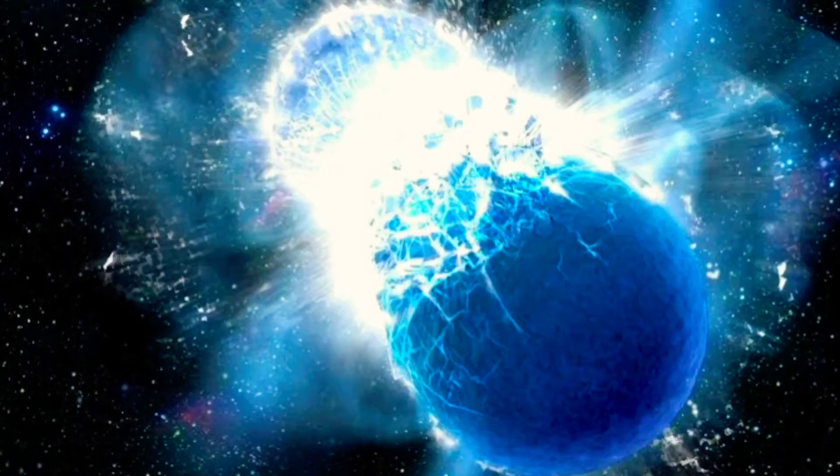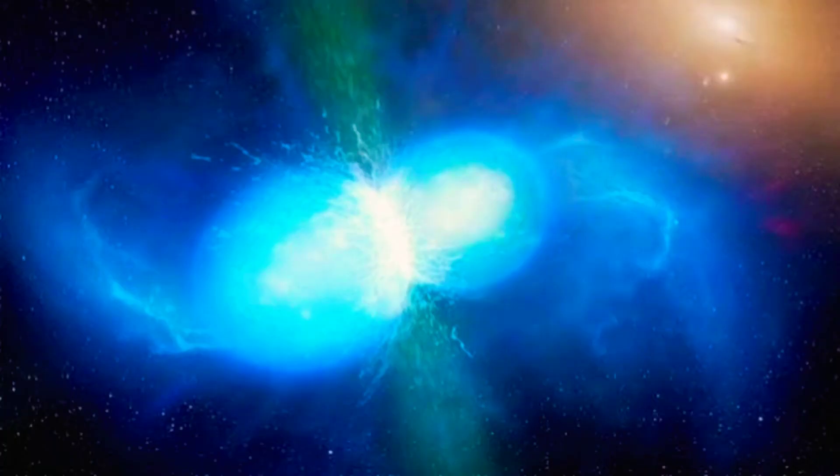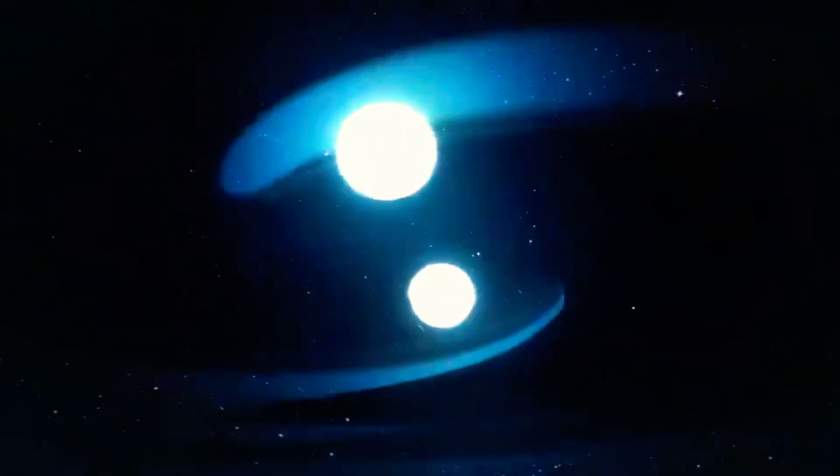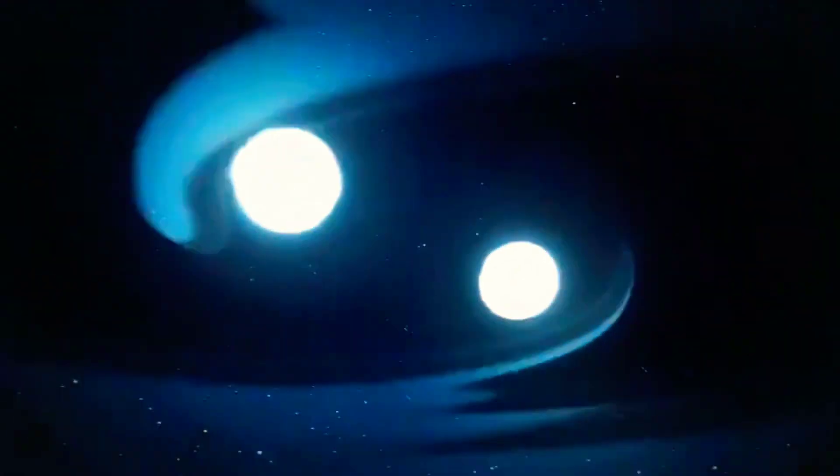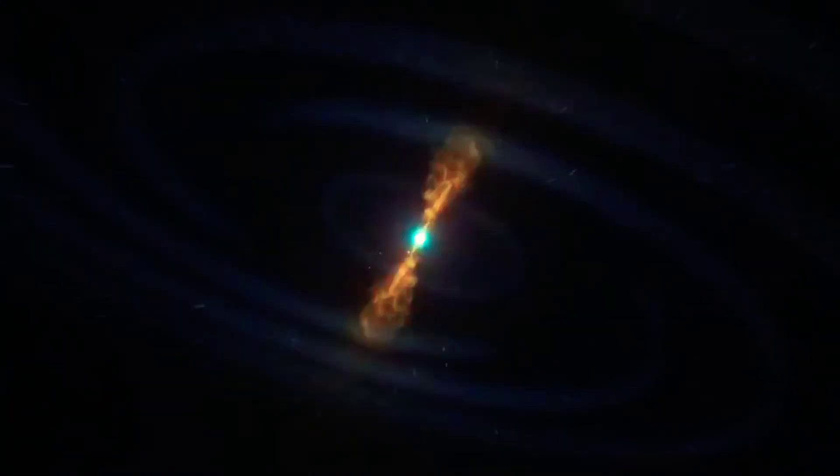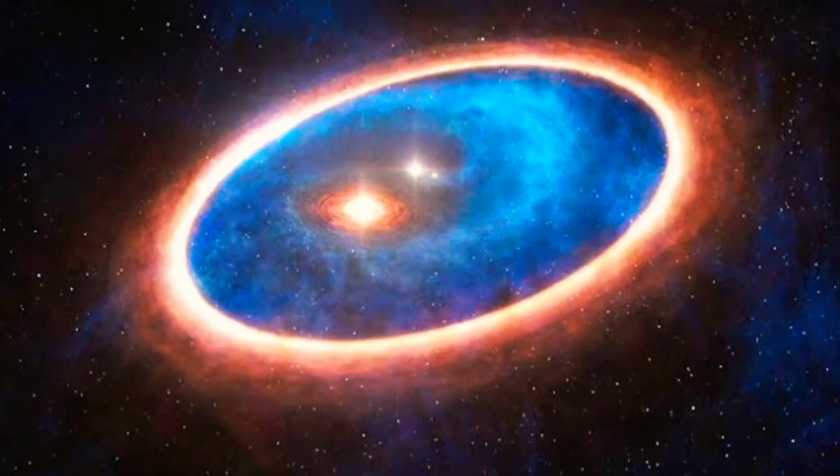MY Camelopardalis is a precursor to a stellar merger. Eventually the two stars, which already weigh in at 32 and 38 solar masses individually, will combine into one giant star over 60 masses in size. Astronomers have long hypothesized that this is how supergiant stars are made, but the phenomenon has never been seen before.